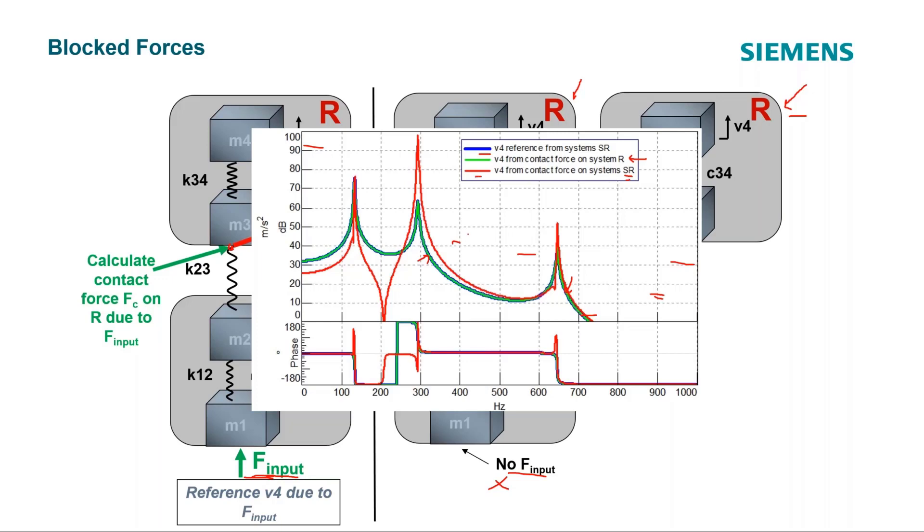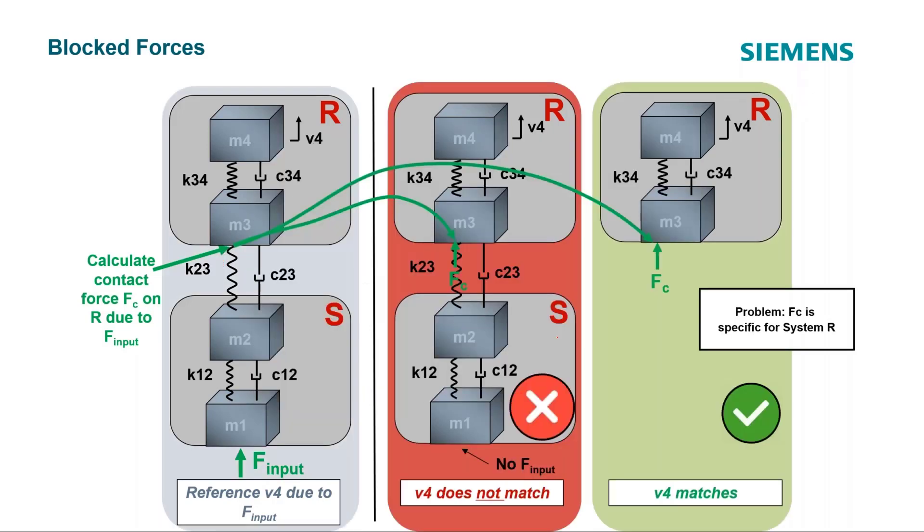But this is not a blocked force, right? This force was calculated with both systems present. So it has some influence of R, has some influence of S, et cetera. Do you know how you calculate a blocked force? You have to get rid of the influence of the receiver. Yeah, it's, it's, the blocked force is going to be the invariant or the force that's coming out of system S alone. Again, this one did not match over here, but this one did.